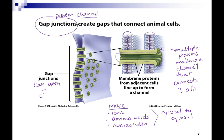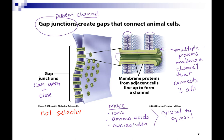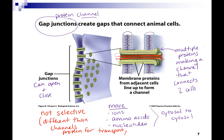Gap junctions can open and close, so there is some control. But unlike channel proteins, these are not selective. They're truly large spaces — whatever can fit can go across. So it's not selective; this is one of the ways it differs from channel proteins for transport. Whatever can fit can go through a gap junction.